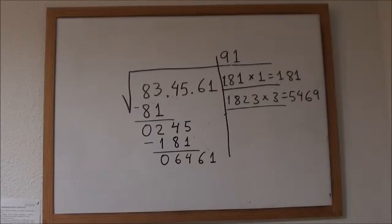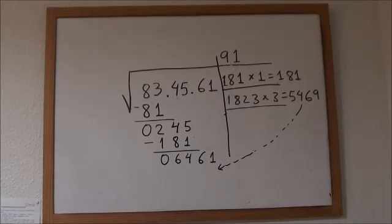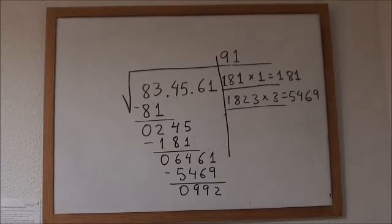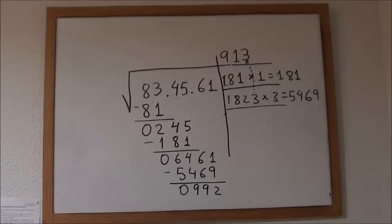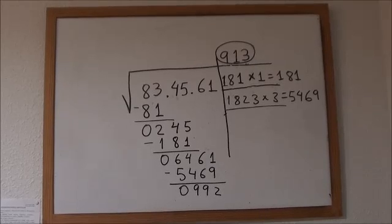So we get 1823 times 3 which is 5469. We bring this number down and subtract, and that is, we get 992 which is our remainder. Don't forget to bring that last digit, 3, up because that is going to give us our square root which is 913. So the square root of 834,561 is 913, but it's not an exact square root because we have a remainder which is 992.